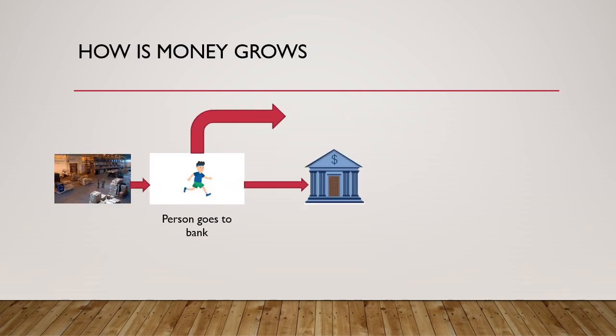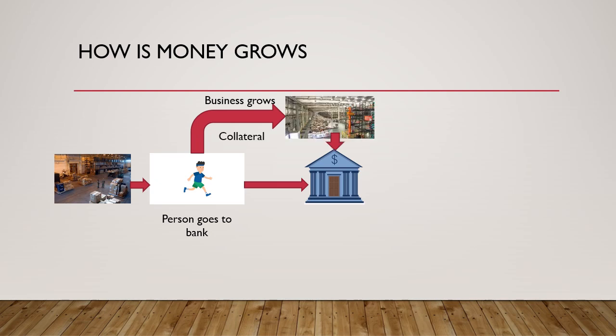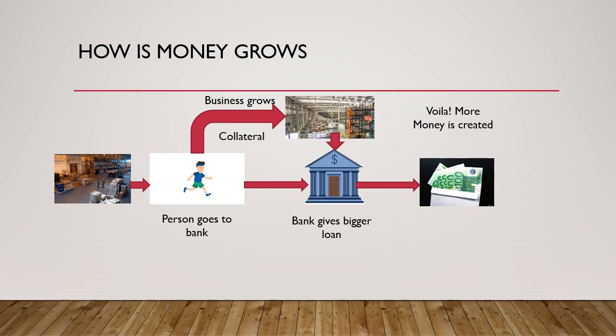How does this money grow in the economy? The person who took the loan invests, his business grows, he has bigger collateral, and there is demand for his products. He goes to the bank again, and with bigger collateral the bank gives him a bigger loan — and voilà, more money is created in the economy.